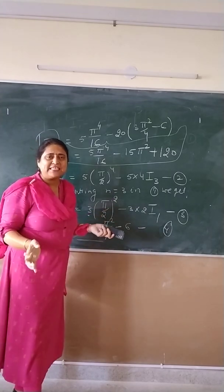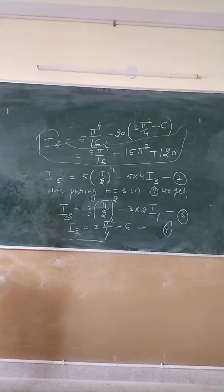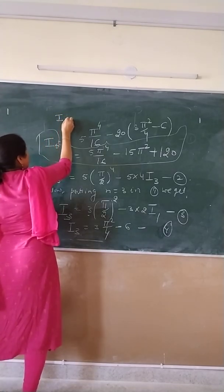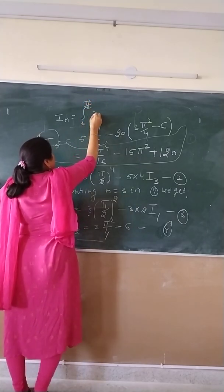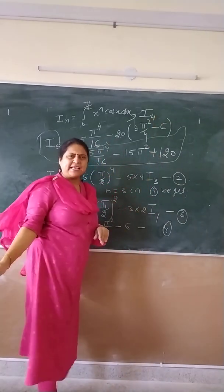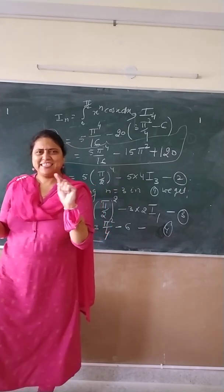Now write out the next question. Find the reduction formula for the integration from 0 to π/2 of x^n · cos x dx, and hence evaluate I₆. Also do your book questions. Tomorrow we will see the next topic.